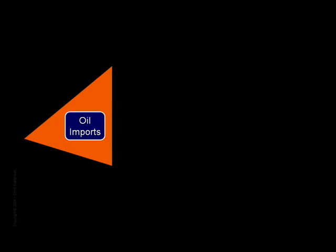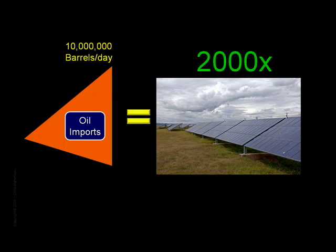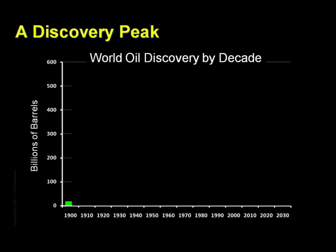Suppose we wanted to become independent from imported oil and decided to replace those 10 million imported barrels with some other form of energy. Those 10 million barrels represent the same energy equivalent as 750 nuclear power plants. Considering the issues we have with the 104 we have operating right now, nuclear power is not a realistic candidate for eliminating oil imports. To replace that energy with solar, wind, or biomass renewables, we'd have to increase our currently installed base by a factor of 2000 — not 2000 percent, 2000 times as much.